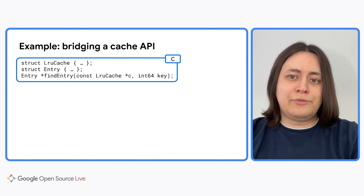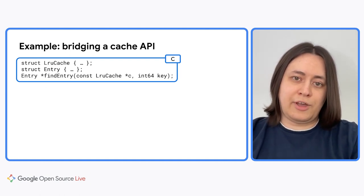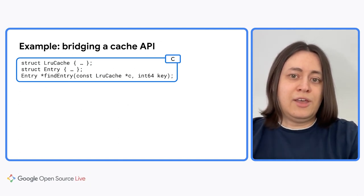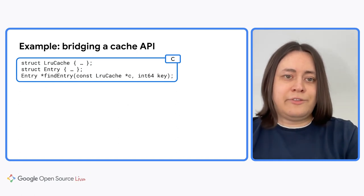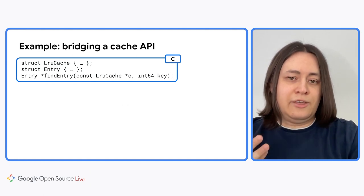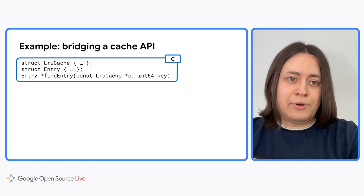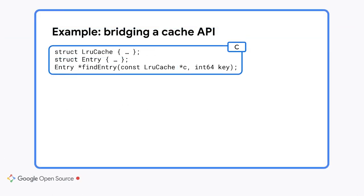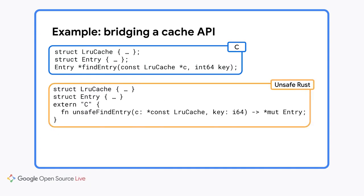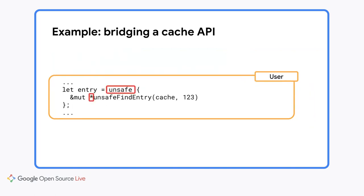Let's look at an example. Imagine that one of the central data structures in your application is an in-memory cache — it is used everywhere. To start writing meaningful logic in Rust, you need to make this cache available to Rust code. Here is the C API for the cache: there is a struct for the cache itself, a struct for the cache entry, and a function to find an entry by its key. You can bridge this simple API to unsafe Rust: C structs become Rust structs, a C function becomes an extern C function in Rust, const pointers in C map to const pointers in Rust, and non-const pointers map to mut pointers in Rust. Note the unsafe keyword, which is necessary to call an unsafe function and to dereference a pointer. Writing unsafe Rust code is tricky and error-prone, so unsafe bindings are not a good choice.